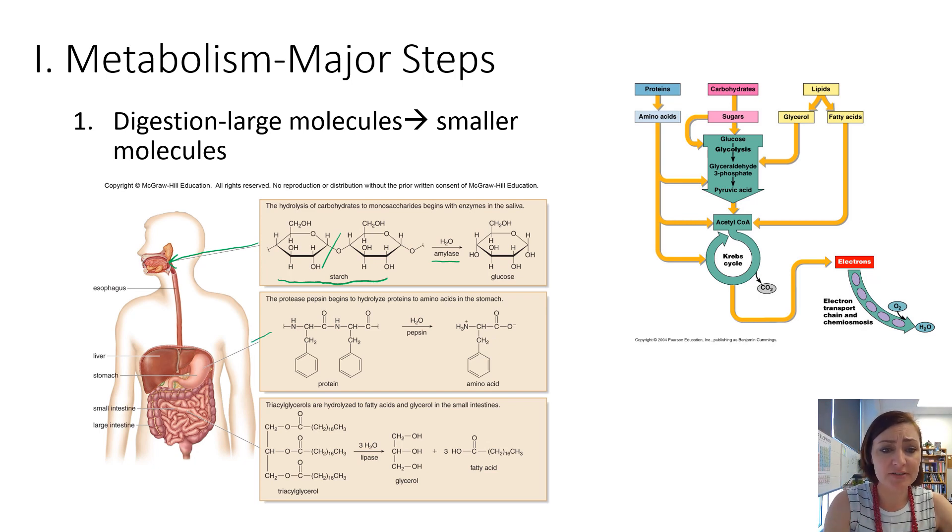Proteins do not start to get digested until you get into the stomach. And it is the enzyme pepsin that breaks those amide linkages between your amino acids. So we're taking the primary structure, a long chain of amino acids in a protein, and breaking them down into their individual amino acids.